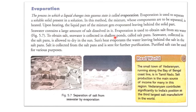To obtain salt, sea water is collected in shallow ponds called salt pans. The sea water collected in the salt pans is allowed to dry in the sun. The sun's heat evaporates the water, leaving behind the salt in the salt pans. The salt is then collected from the salt pans and sent for further purification.